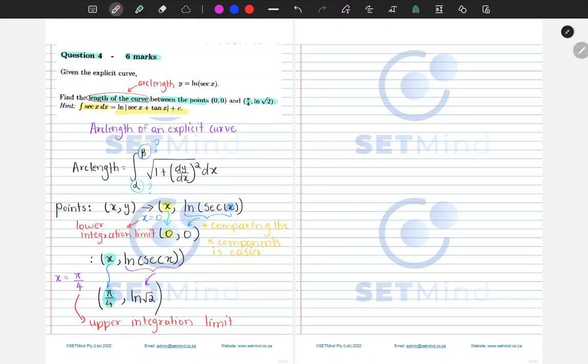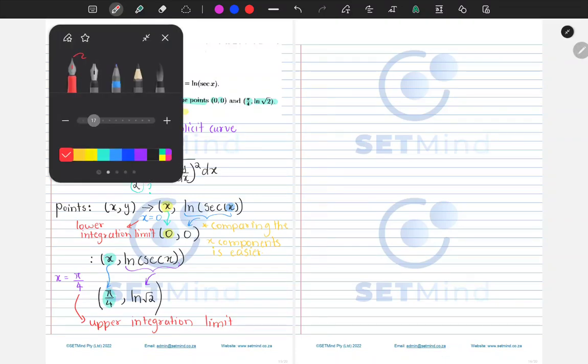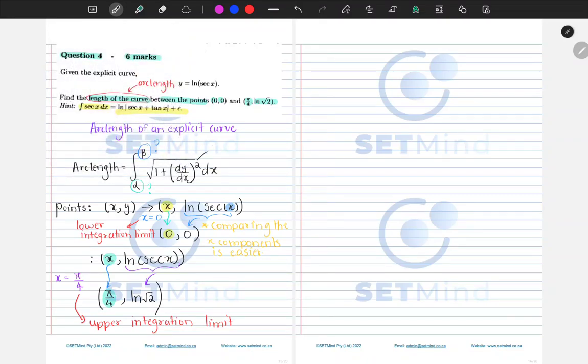Now that we have our α and β, we can find what we need inside the integral. Inside the square root, we need the derivative of y. So I have ln(sec x). The derivative of ln of anything becomes 1 over what is inside the ln, then multiply it by the derivative of the inner function by chain rule. Our dy/dx will be the derivative of sec, simply sec x tan x, divided by sec x. We'll be left with tan x.